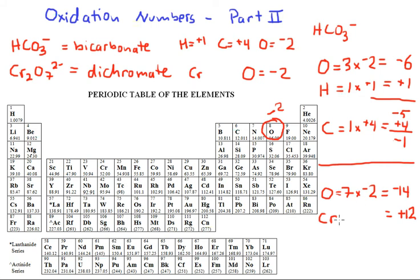And I know that I have two of these chromiums. So by dividing positive twelve by two, we can find a charge of positive six for each chromium. So the oxidation state for chromium in the polyatomic ion dichromate would be positive six.